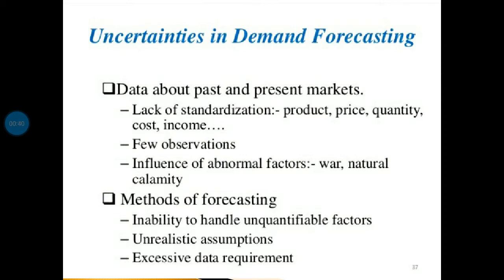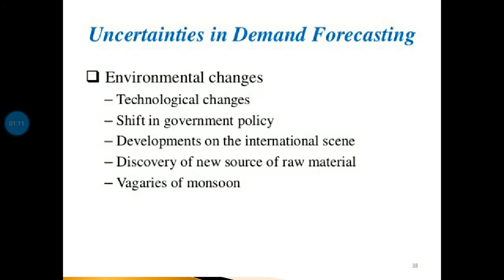We had already discussed two major methods of demand forecasting, that is qualitative methods and quantitative methods. But after applying these methods, analysts find certain uncertainties in demand forecasting. Demand forecasts are subject to error and uncertainties which arise from three major principal sources: data about past and present market, methods of forecasting, and environmental changes. In today's session, let us discuss these uncertainties and how to cope with them.